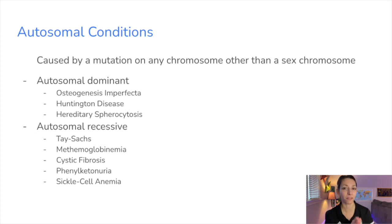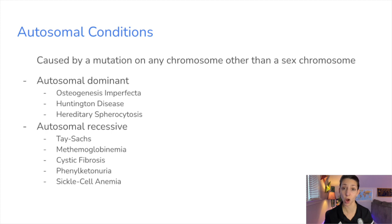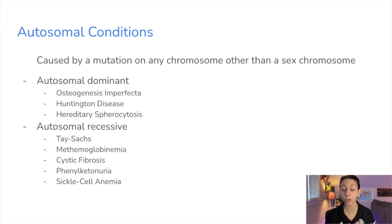You might have heard of Huntington's disease as an example of an autosomal dominant genetic disorder, which often doesn't appear until later in life, so people can pass it on to their offspring without even knowing they have it. There are also lots of autosomal recessive disorders like Tay-Sachs disease, cystic fibrosis, PKU, and sickle cell anemia.